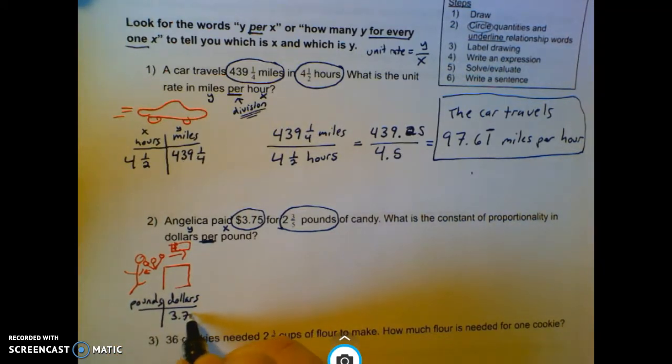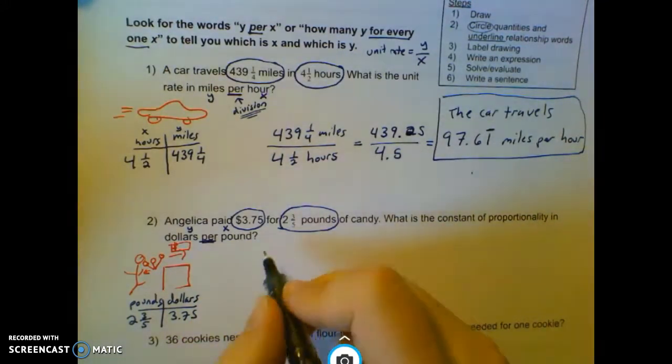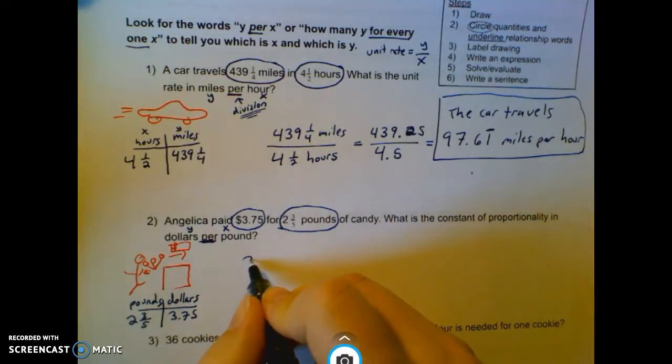So 3.75, 2 and 3 fifths, get labeled there. And then this per means division. So we're going to do 3.75 divided by 2 and 3 fifths pounds.